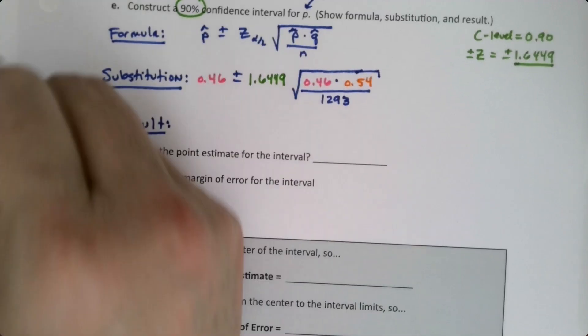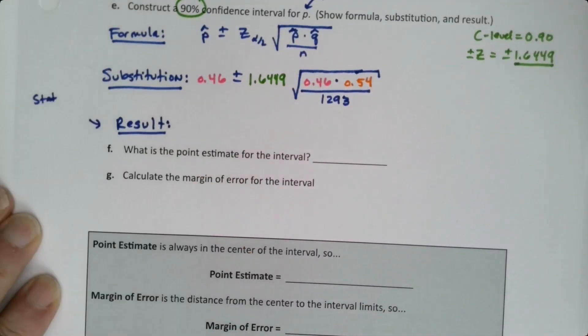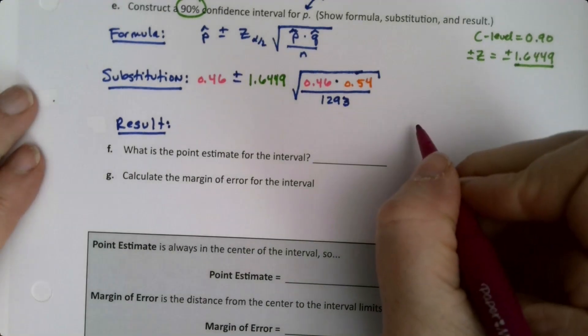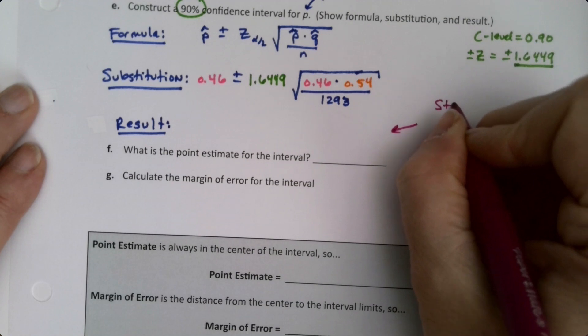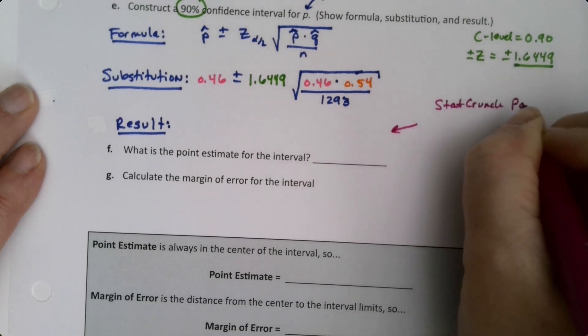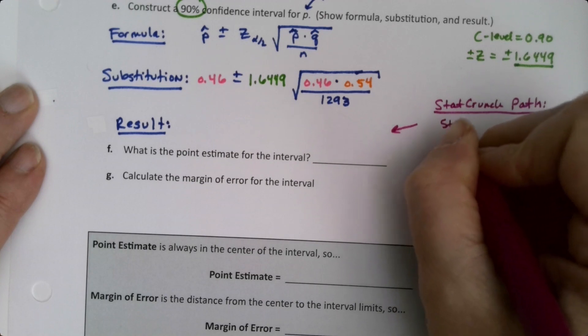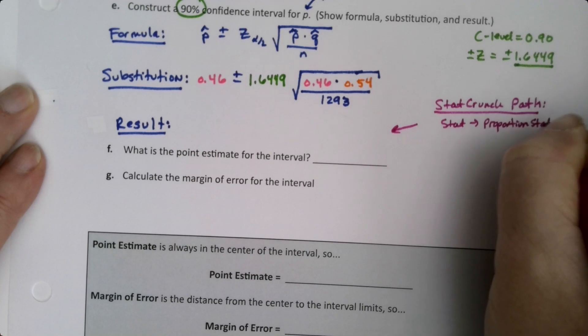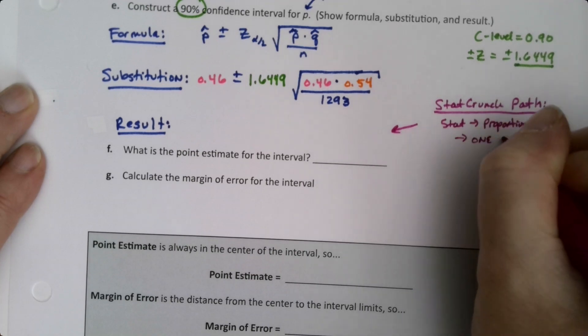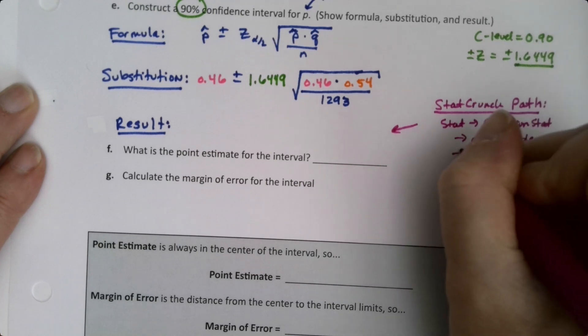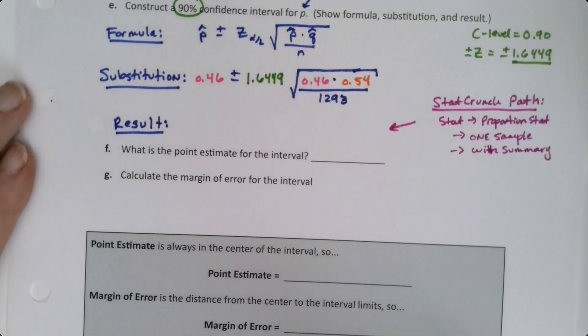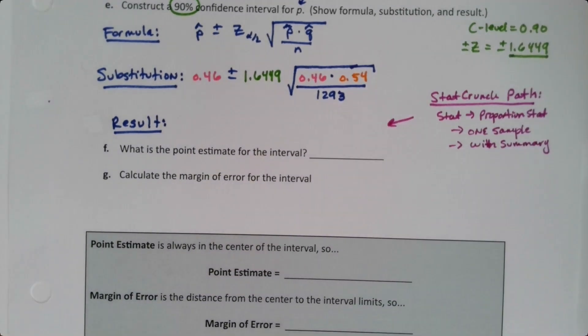So to get this, I'm going to use Stat, sorry let me put it in a different color or something. So I'll just write it right here. StatCrunch path: Stat, Proportion Stat, one sample, with Summary. Okay, so let's go grab StatCrunch and try that out.